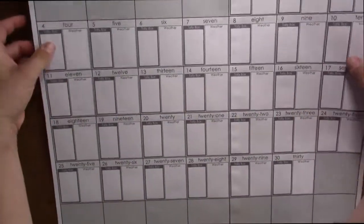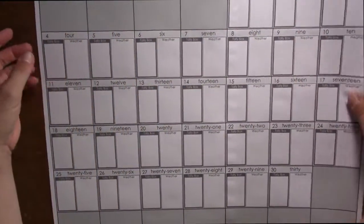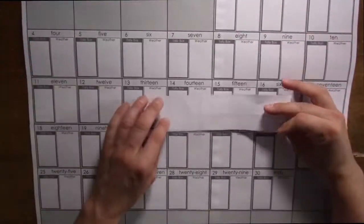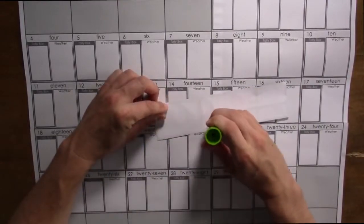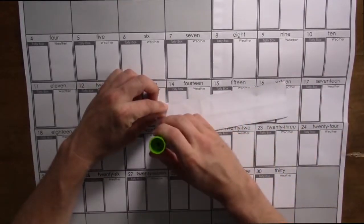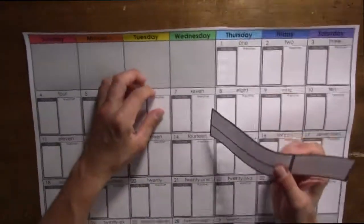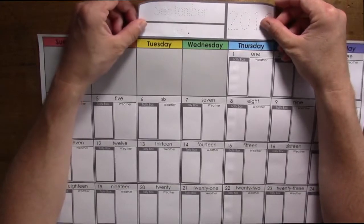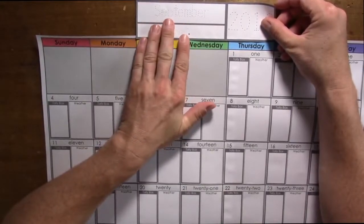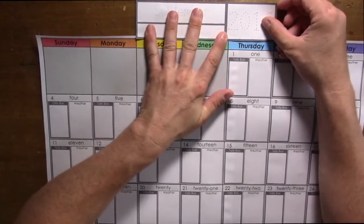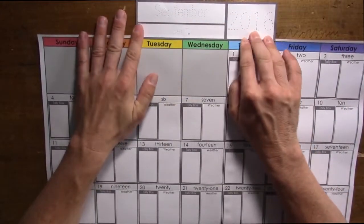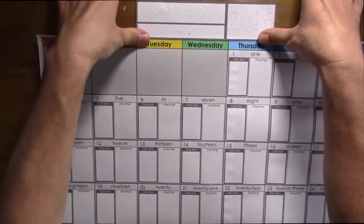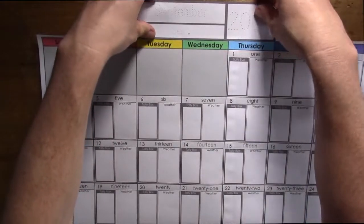And there we go. So the calendar part of it is finished. Now we just need to glue the month. I'm just going to run a little bit of glue along the bottom here. And for the days, Tuesday, Wednesday, and Thursday, the month should just stick right on top there, again, using the gray borders to help align where you're gluing.